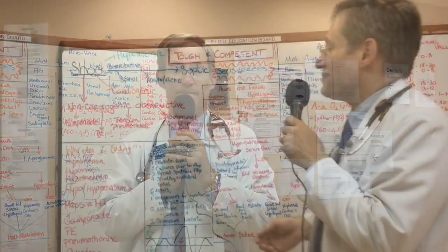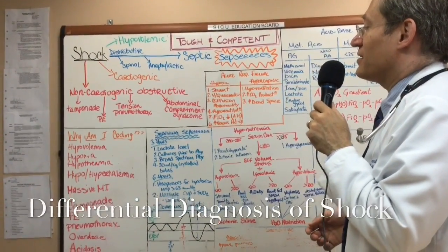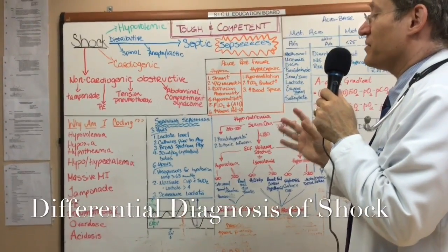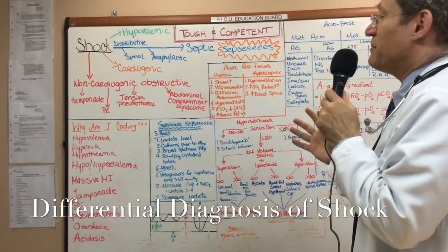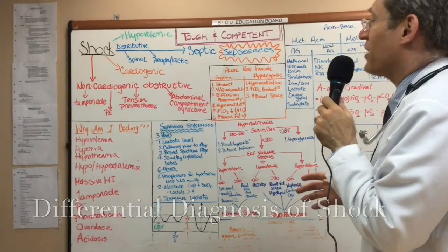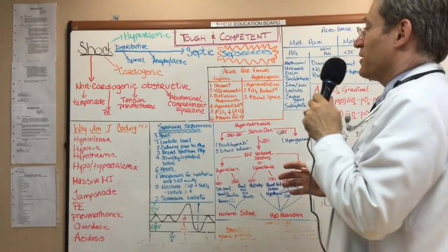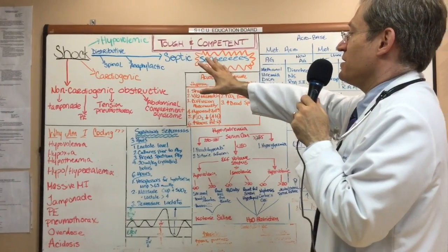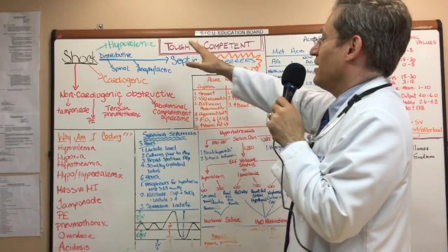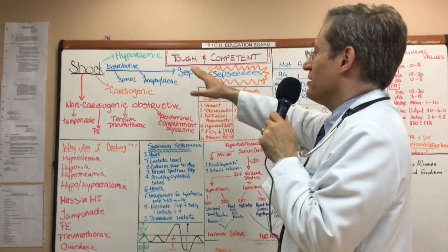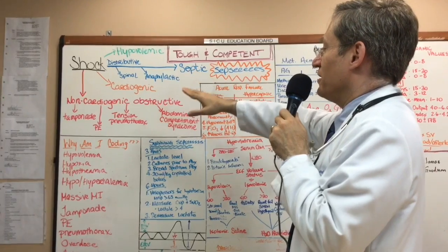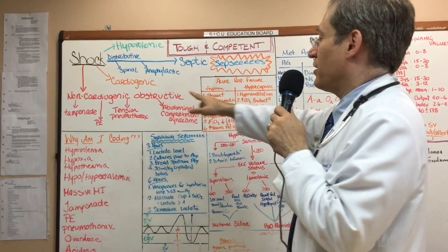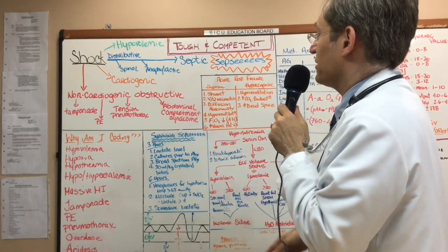In terms of differential diagnosis of shock, there are some important categories that you need to keep in mind when you're caring for the critically ill patient: hypovolemic, distributive, cardiogenic, and non-cardiogenic obstructive.